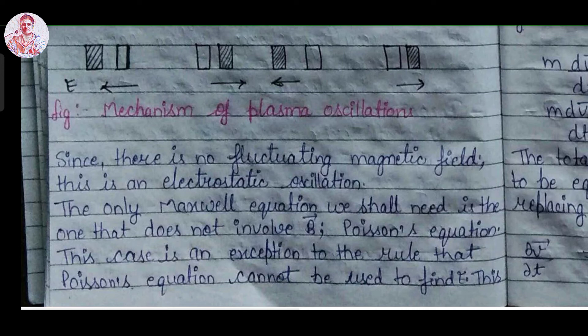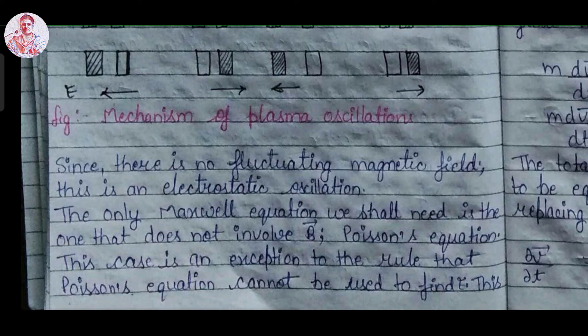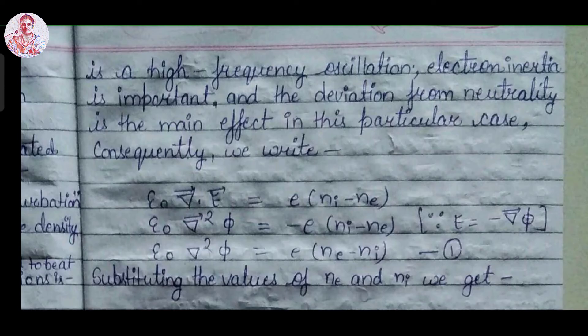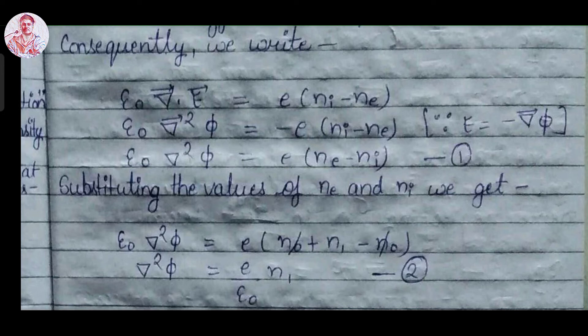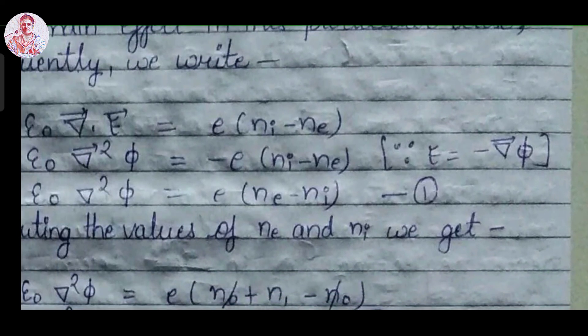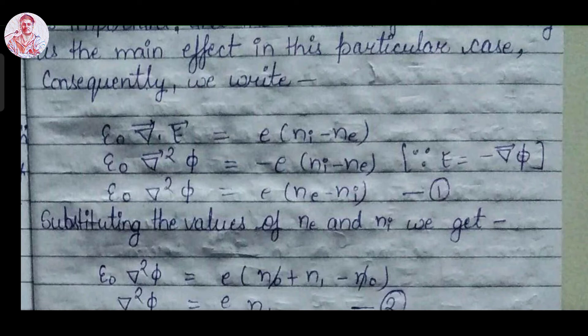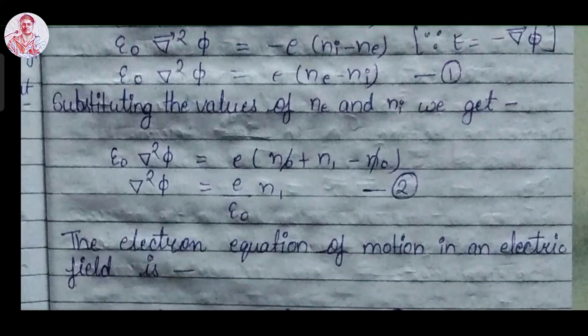Using the Poisson equation and Maxwell's equation, we can derive the plasma frequency. We write epsilon_0 times del dot E equal to e times (N_i minus N_e). Since the electric field is the negative gradient of potential, substituting gives epsilon_0 del-squared phi = e(N_e - N_i). This is equation 1. Substituting N_e = N_0 + N_1 and N_i = N_0, we get del-squared phi = (e / epsilon_0) N_1. This is equation 2.